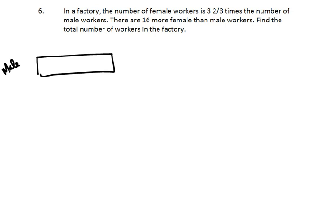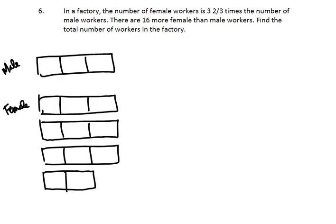We know that the female workers are three and two-thirds times the number of male workers. So let's start with the male workers, and since we're working with thirds, let's break them down into thirds. Then the females should be three times the male plus another two-thirds of what the males are.